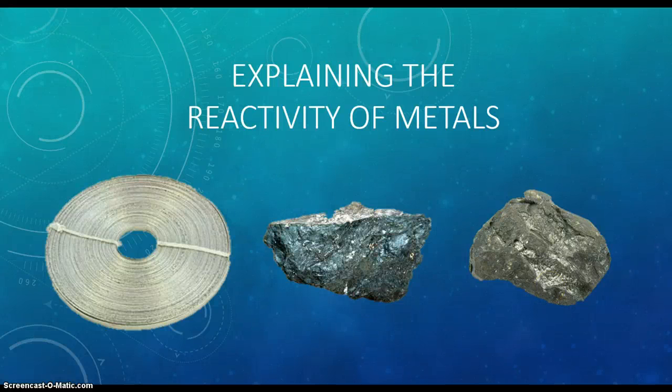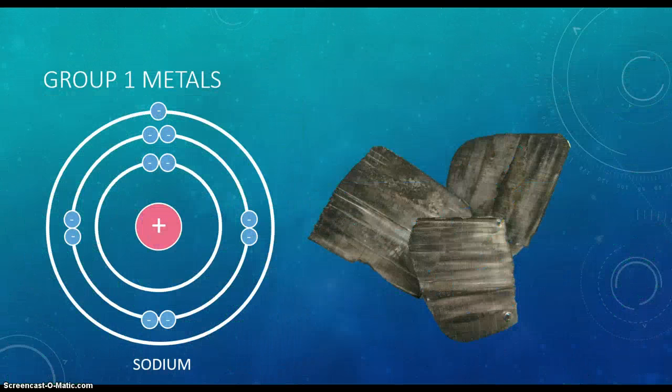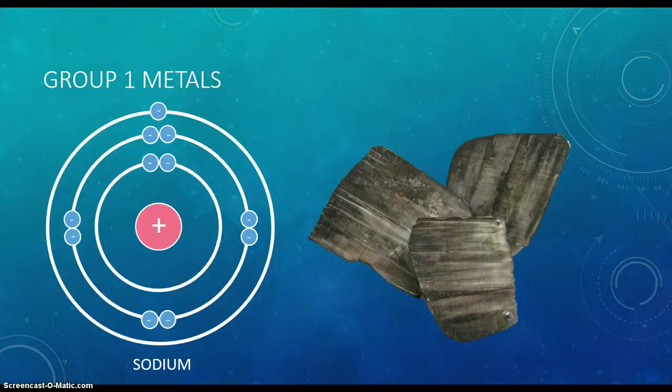Hello. Today we will be explaining the reactivity of metals. This is a sodium atom. Sodium is a group 1 element because it has one electron in its valence or outer shell. The easier the electron is able to be removed from the atom, the more reactive a metal is.